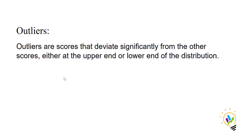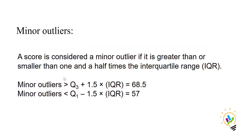Now let us see what outliers are. Outliers are scores that deviate significantly from the other scores, either at the upper end or the lower end of the distribution. There are two types of outliers: minor outliers and major outliers, also called extreme outliers.